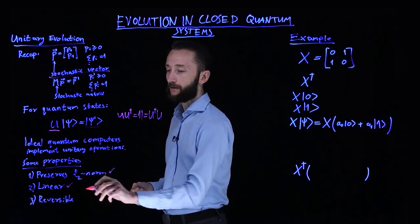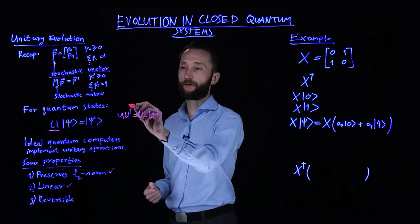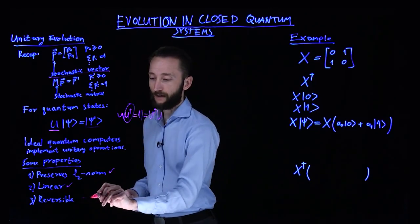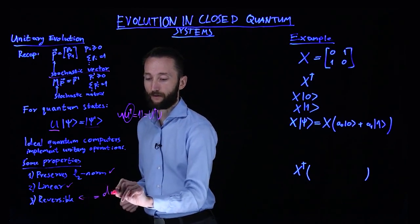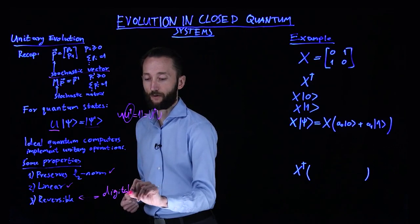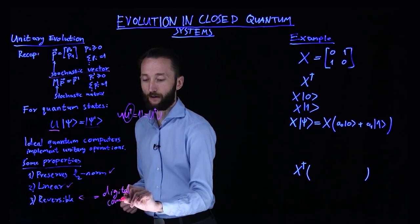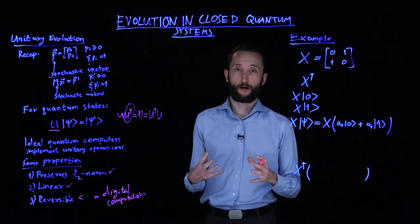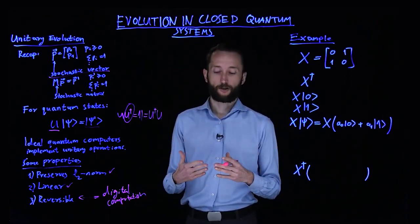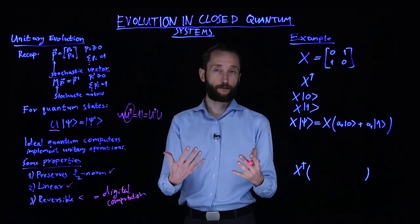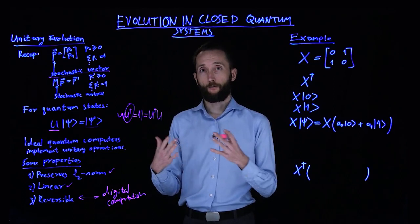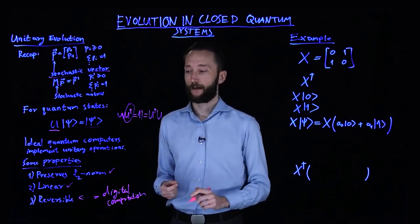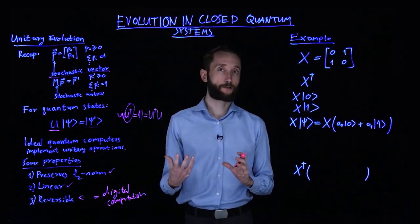Then the calculation is reversible. So that's come from this property. You can always invert this matrix. So this is in stark contrast with what you see in digital computing. Because in digital computing, you actually lose information as you proceed in a calculation. For instance, if you apply an AND operation, just by looking at the outcome of this AND logical gate, you will not be able to tell what were the two initial bits that went into this gate. So you lose information. This cannot happen in this idealized quantum system.